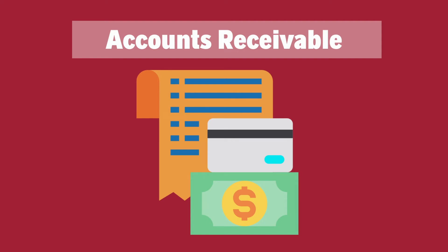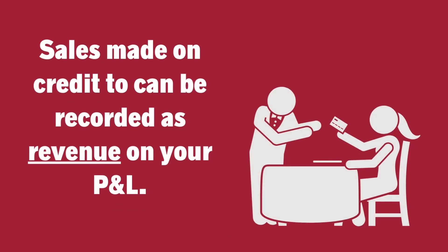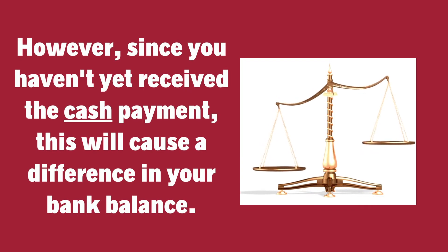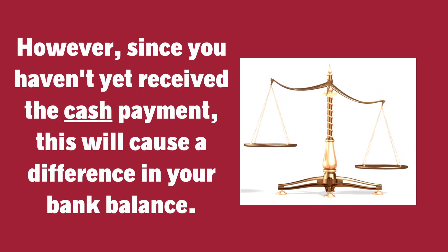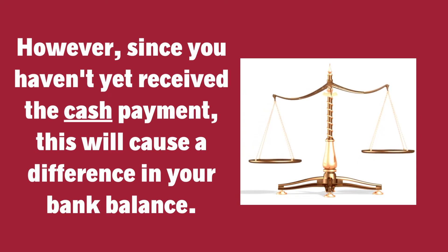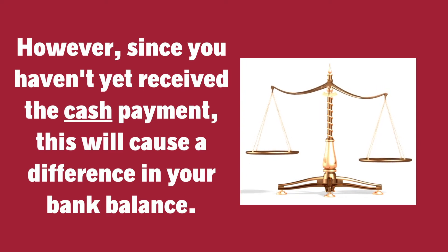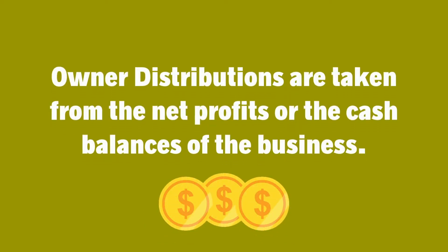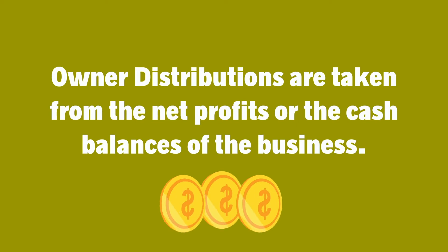Number four: accounts receivable. Sales made on credit to customers — where they receive the product or service but pay you back later — can be recorded as revenue on your P&L even though you haven't yet received the cash. This can cause your P&L net profit to look really great, but because you haven't yet received the payment, it will cause a difference in your bank balance.